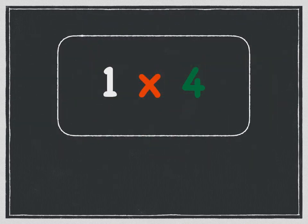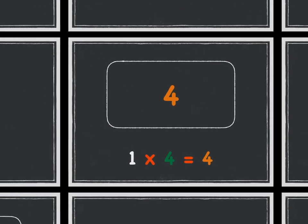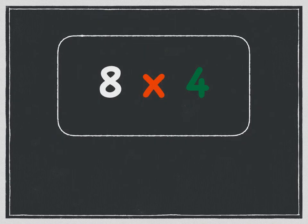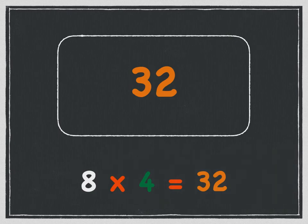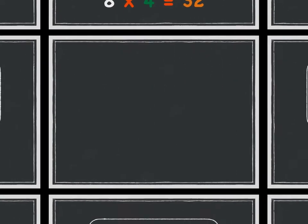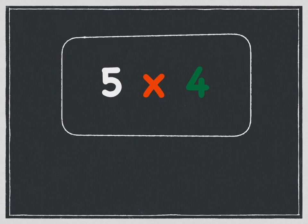One times four is four. Eight times four is thirty-two. Eight times four is thirty-two.